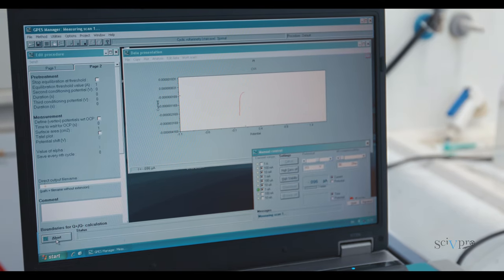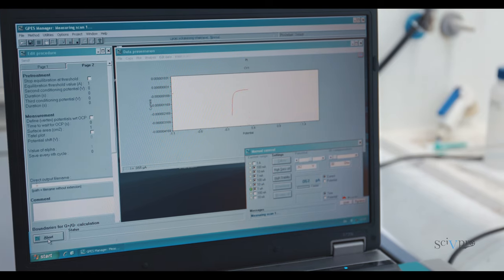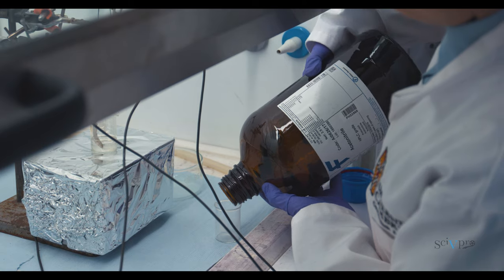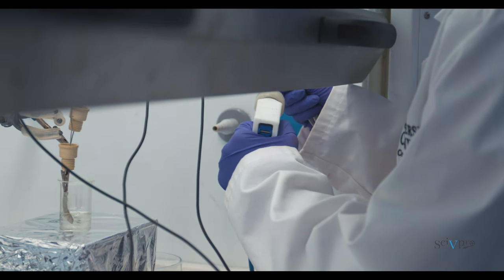In the Galvanostat control software, press start. During the deposition, monitor current versus time. After completion, rinse the substrate with acetonitrile and dry it with nitrogen stream.